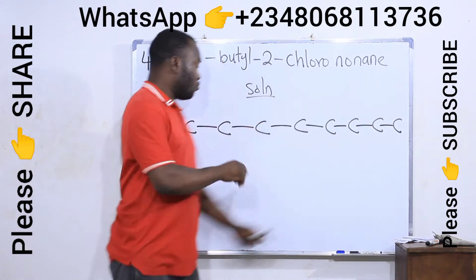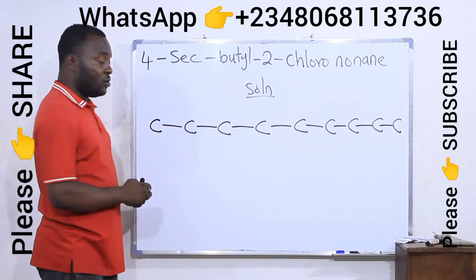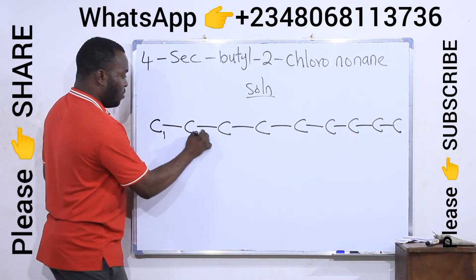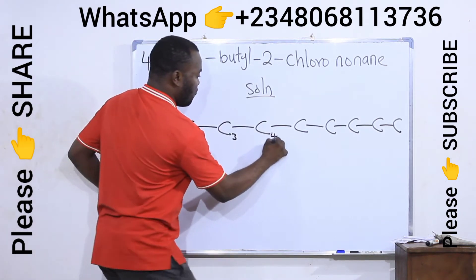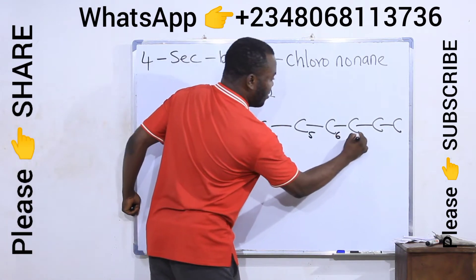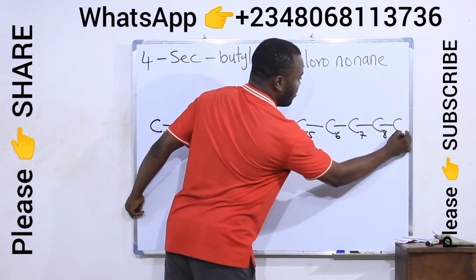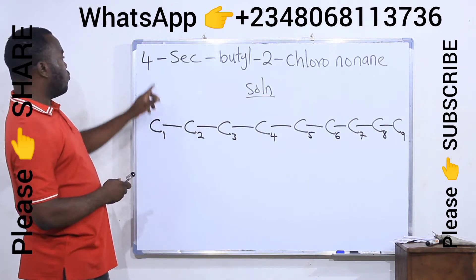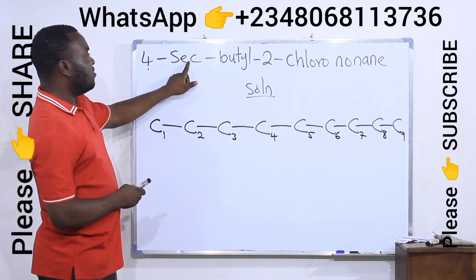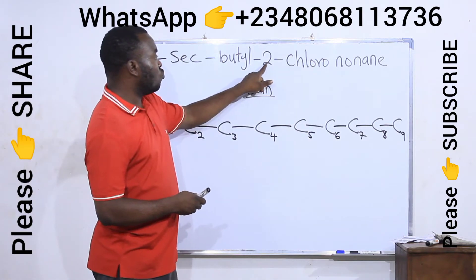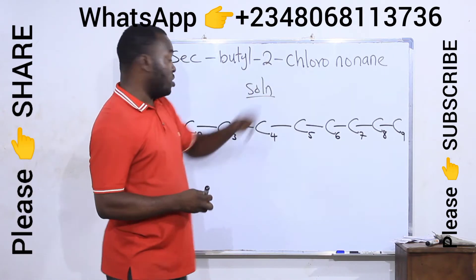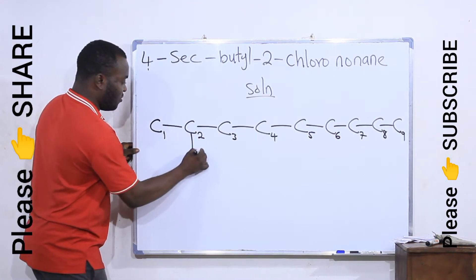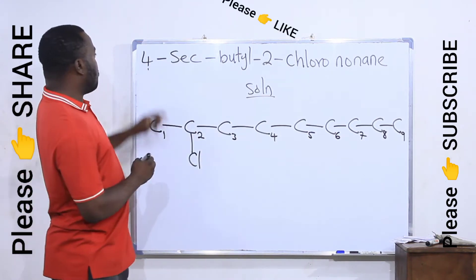After drawing the longest chain, how did I get nine? The name ended with nonane, so draw nine carbons. Now number from any side of your choice: one, two, three, four, five, six, seven, eight, nine. Now go to position four, attach sec-butyl. Go to position two, attach chloro, which is chlorine. This is position two. I will attach chlorine here, that is Cl.